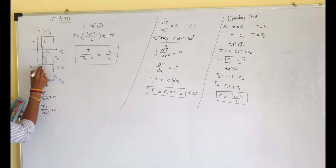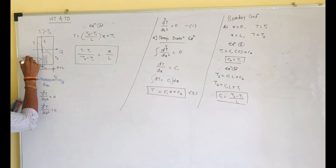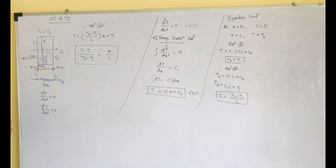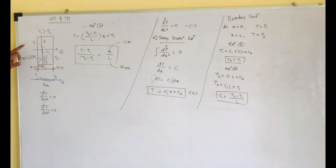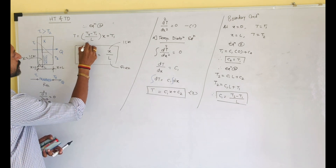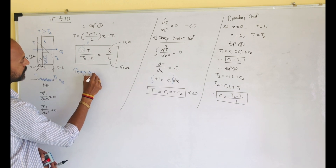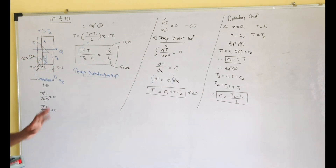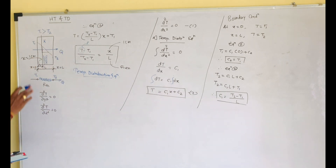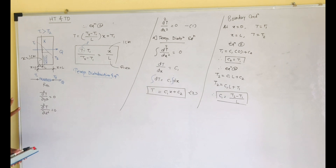This is the temperature distribution equation for the plane wall. For example, if x = 1 cm and the total thickness L and surface temperatures T1 and T2 are known, we can easily calculate the temperature T at that location. This is the significance of the temperature distribution equation. In the next video lecture we will calculate the heat transfer through the same plane wall. Thank you all for connecting with us — have a great day ahead.